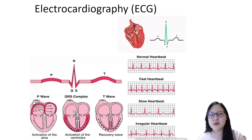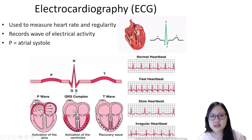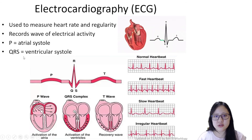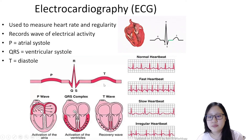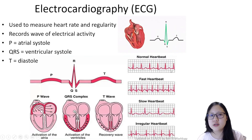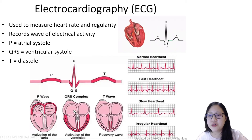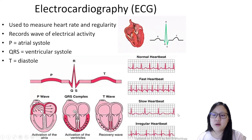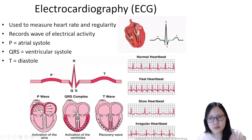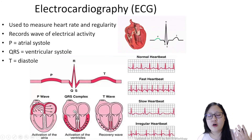The P wave occurs when there is contraction of the atria. QRS happens when there's contraction of the ventricles during ventricular systole. T is diastole — it's a recovery wave. You can see how a normal heartbeat looks. In Korean dramas, if the character dies, it flatlines. If the heart is beating fast, the frequency of these peaks increases. If it's slow, the peaks are wider apart. By looking at the graph and the x-axis, you can calculate heartbeat and determine whether it's regular or irregular.